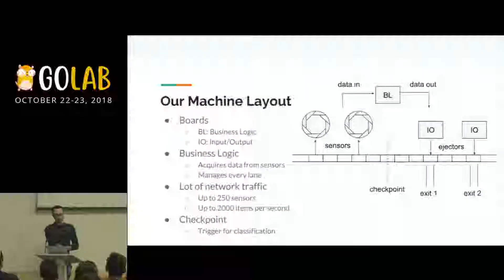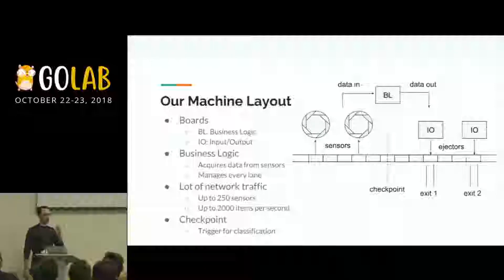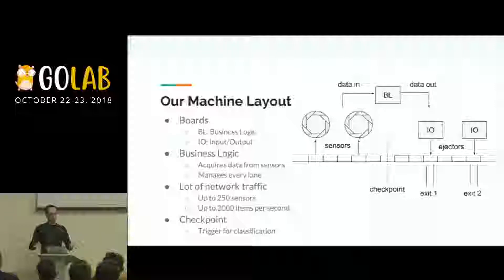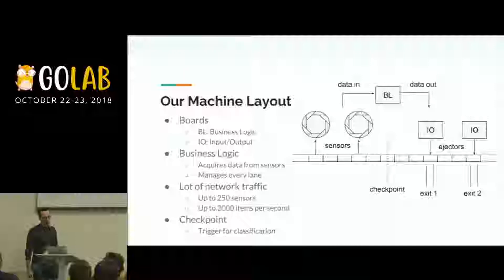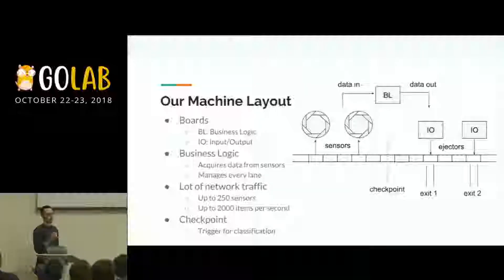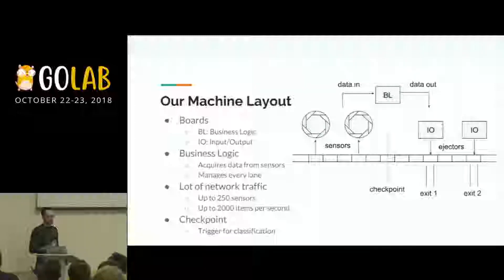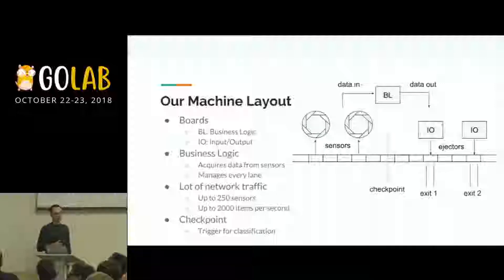Let's see our hardware architecture. The machine layout is split among several boards. We have mainly one business logic board which does all the work, and multiple input/output boards which are intended to drive the ejectors. We also have some sensors along the lane. The sensors produce readings, and the business logic has to collect all of these measurements. These measurements must be available at a very specific point which we call a checkpoint — the point where the classification algorithm is performed — and we need all the measurements at that point, otherwise we cannot classify the object.